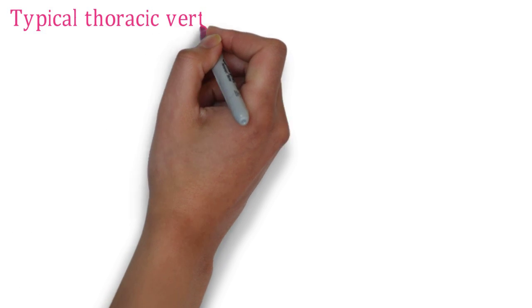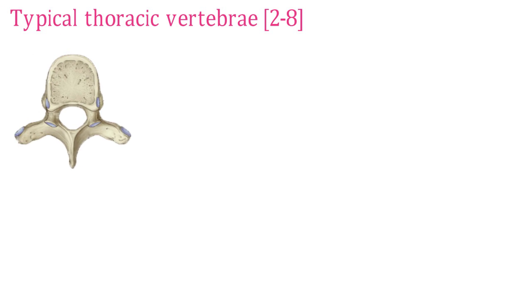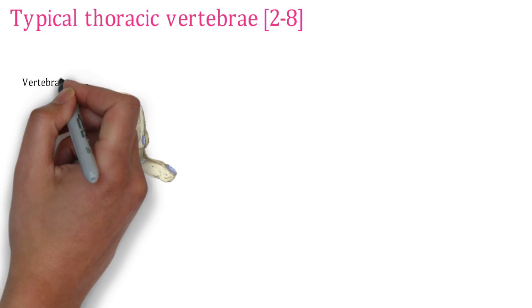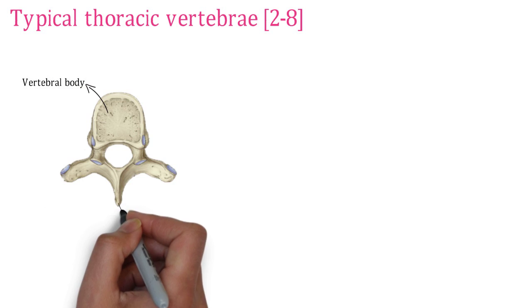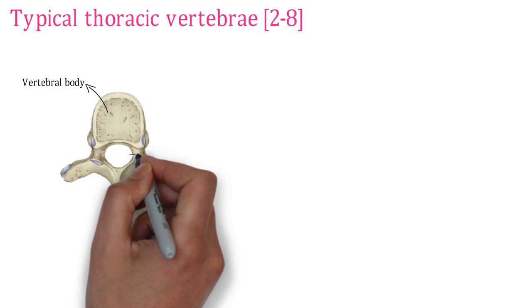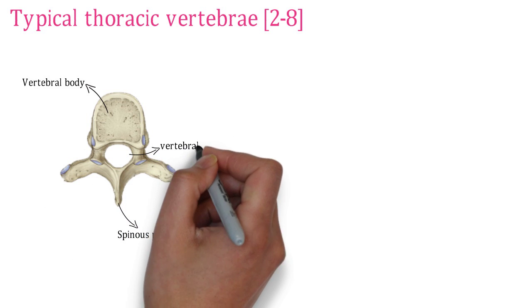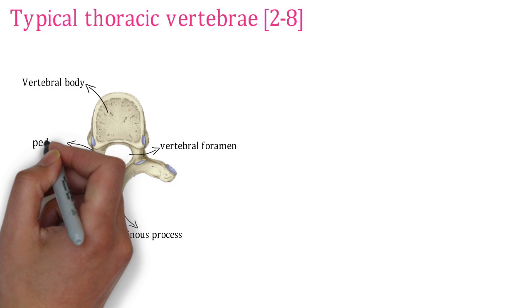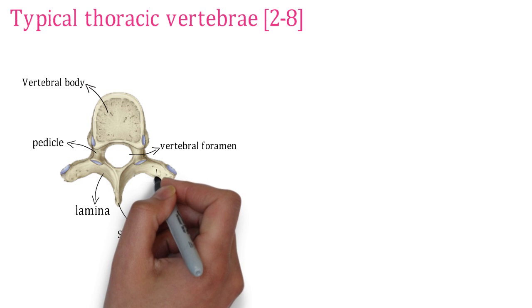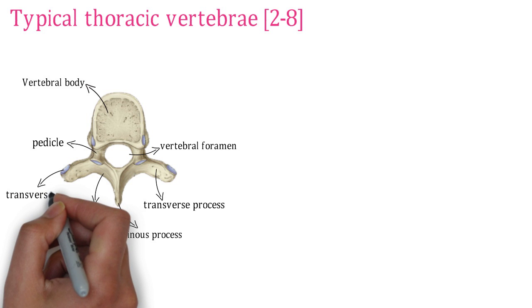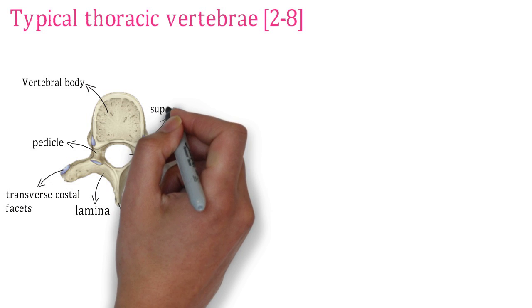Now let's start with the typical thoracic vertebrae. This is the superior view of the typical vertebra. The vertebral body is heart-shaped. The spinous process is usually long. The vertebral foramen is circular in shape. The lamina is usually broad and overlaps with the lower vertebra. The pedicle and the transverse process are club-shaped.